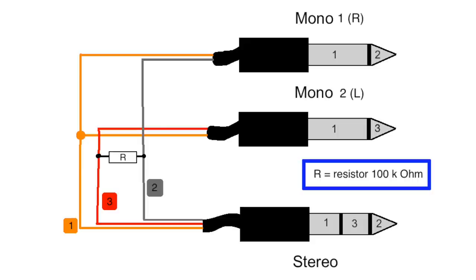The most important part of the splitter is the resistor. Connect it between the signal cables 2 and 3. The splitter cable will not work without this.